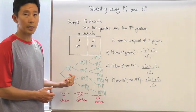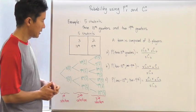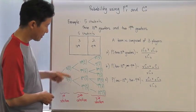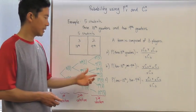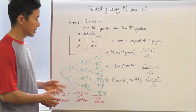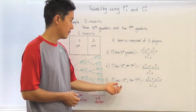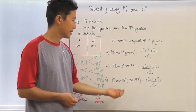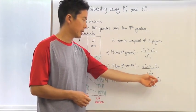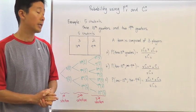If we used the tree diagram instead, we'd have to go through all routes with two tenth graders and one ninth grader — it gives the same result but is more complicated and time-consuming. For our last case — one tenth grader and two ninth graders — the probability is simply C(3,1) times C(2,2) divided by C(5,3). Use your calculator and you're done.